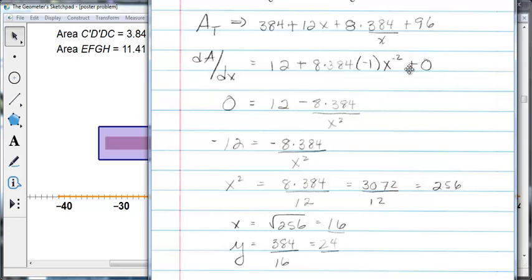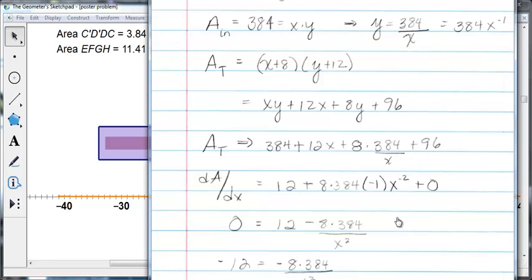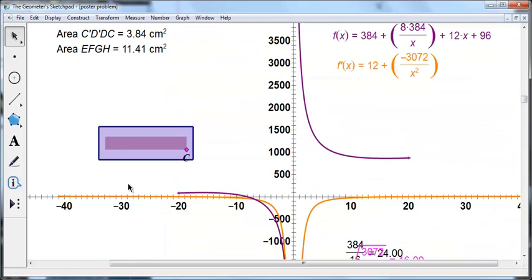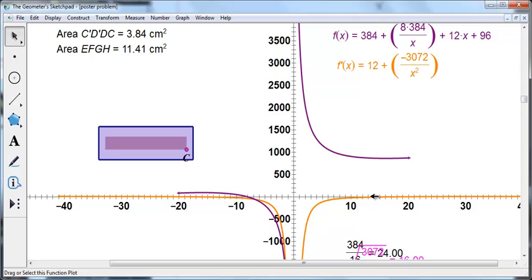And then y, I just substitute back in, divide 384 by 16, and I get 24. And 16 is what we counted over here when we set the derivative equal to 0. So hopefully this algebraic, you can see how the algebraic relates to the graph and the derivative.